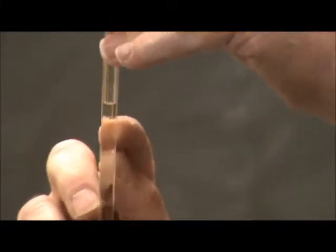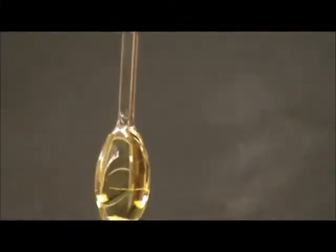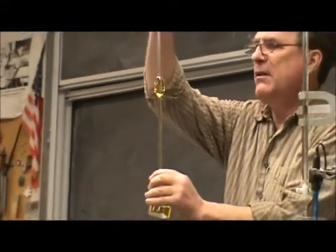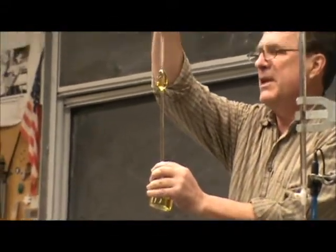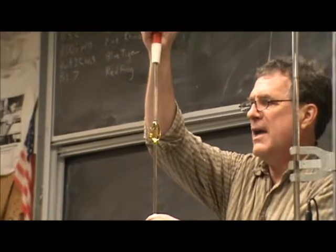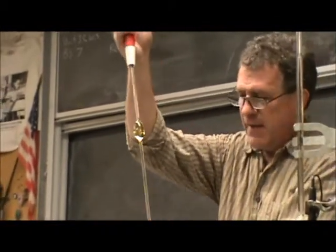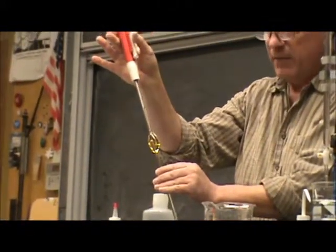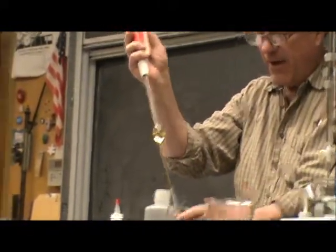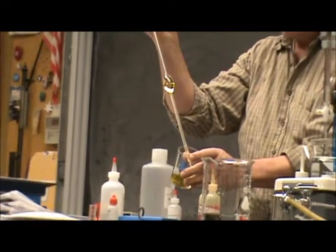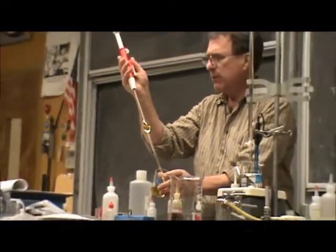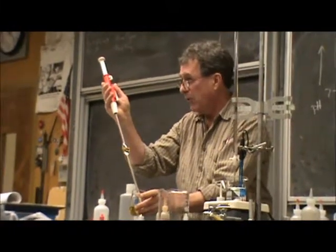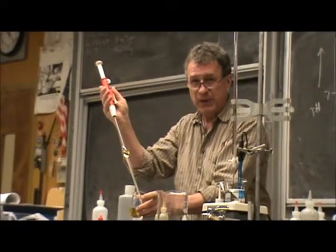If I lower the level to where the bottom of the meniscus is right at that etched line, then this pipette will deliver, when I hit the little valve right here and let the air out, it will deliver 25.00 milliliters to about an accuracy of about 0.02 milliliters.